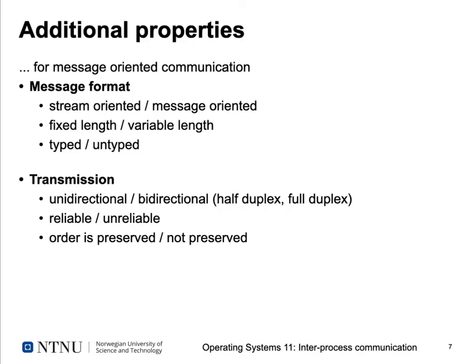Message format is an important property. Stream-oriented communication exchanges a stream of characters or bytes with no fixed format. Message-oriented communication uses a prescribed structure agreed on by sender and receiver. Messages can have fixed or variable lengths, and can be typed — declaring which message types are allowed — or unstructured.